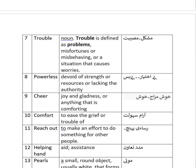Number 7 is 'trouble' — noun; defined as problems, misfortunes, or misbehaving, or a situation that causes worries. In Urdu: Mushkil, musibet. Number 8 is 'powerless' — devoid of strength or resources, or lacking the authority. In Urdu: Be akhtyaar, bebas.